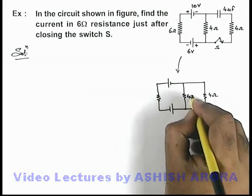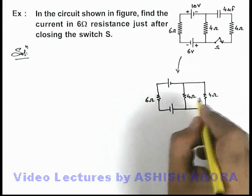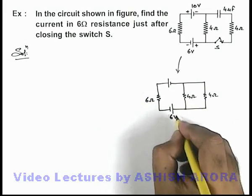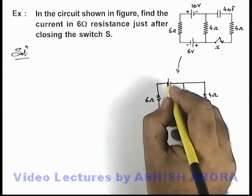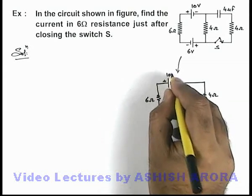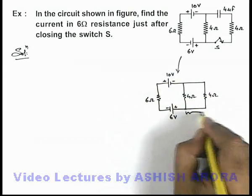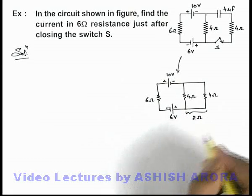Here you can see just after closing the switch, these two resistances of 4 ohms and 4 ohms will act in parallel combination. So in this situation, these two can be considered as a single resistance of 2 ohms.